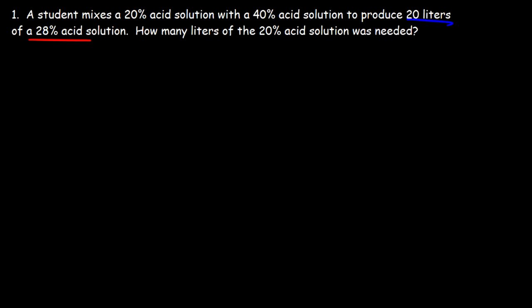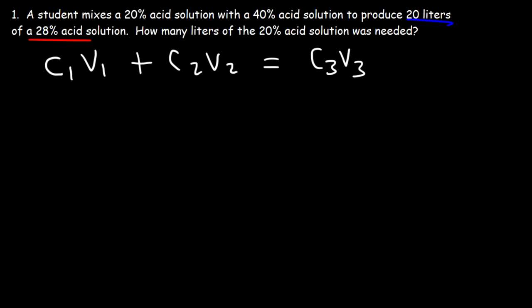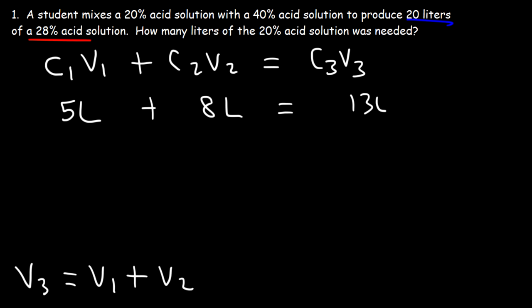So what can help us solve these types of problems? It turns out there's an equation you can use: C1·V1 + C2·V2 = C3·V3. C1 stands for the concentration of the first solution and V1 is the volume. C3 represents the concentration of the mixture and V3 is the volume of the mixture. When you mix the two solutions, the volume of the third solution is the sum of the first two. So if we mix a 5-liter solution and an 8-liter solution, the total volume is 13 liters — it's additive. So V3 is always going to be V1 plus V2. This equation is very useful for solving these types of problems.